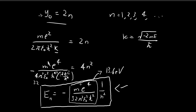This energy level formula had already been known to scientists before Schrödinger. Niels Bohr obtained it using his more primitive model of the atom, and it is also related to the Rydberg formula derived empirically. Schrödinger, using his equation, reproduced the same energy levels as Bohr, confirming he was onto something correct. This gives great credibility to the Schrödinger equation — it successfully reproduces the correct energy levels of the electron in a hydrogen atom.